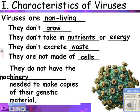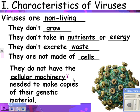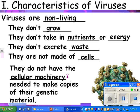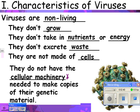Viruses also do not have the cellular machinery needed to make copies of their genetic material. Cellular machinery means the ribosomes and enzymes — all the stuff you need to make DNA or RNA replicate itself.